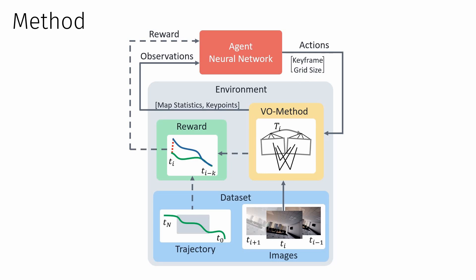Crucially, we propose to train a neural network using reinforcement learning because there exists no ground truth for optimal actions. Within this framework, we consider the underlying image sequence and the VO system as the environment. From the environment, the agent receives observations in the form of tracked keypoints, distance to previous keyframes, and previously estimated poses. The reward is constructed based on the pose error between the predicted and ground truth pose.